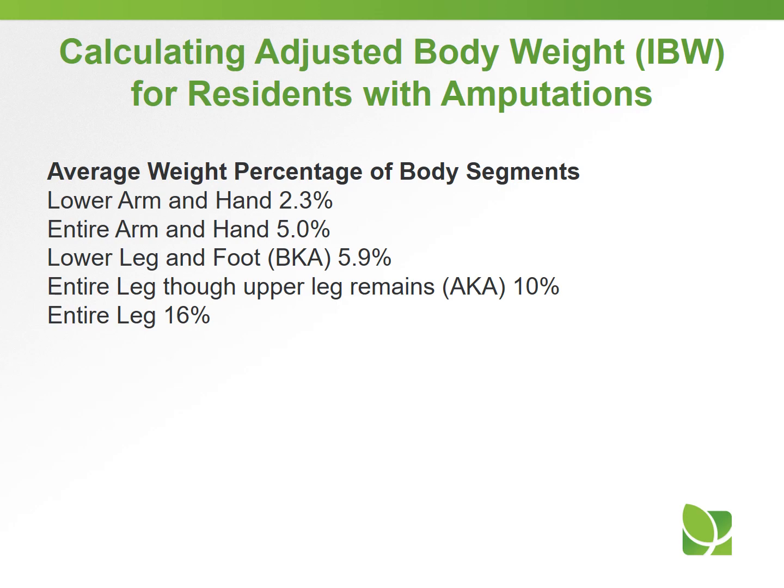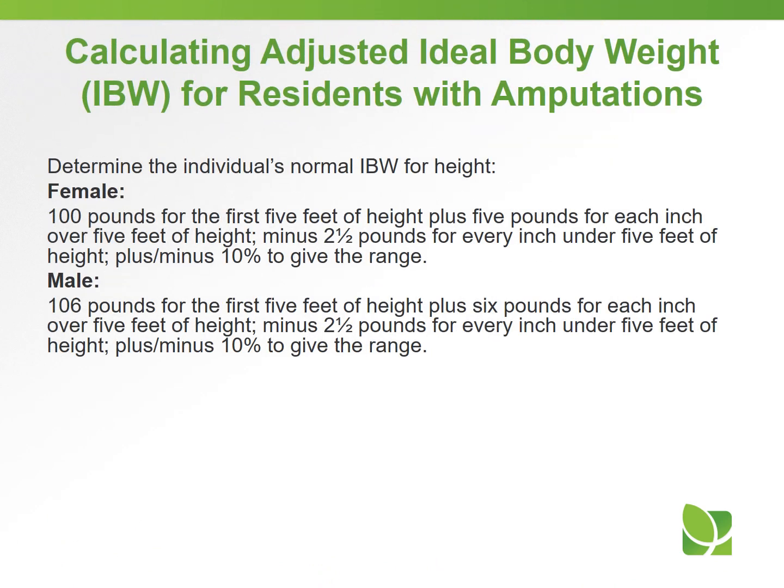To determine the individual's normal IBW for height: for females, 100 pounds for the first five feet of height, plus 5 pounds for each inch over five feet, minus 2.5 pounds for every inch under five feet, plus or minus 10% to give the range. For males, 106 pounds for the first five feet of height, plus 6 pounds for each inch over five feet, minus 2.5 pounds for every inch under five feet, plus or minus 10% to give the range.